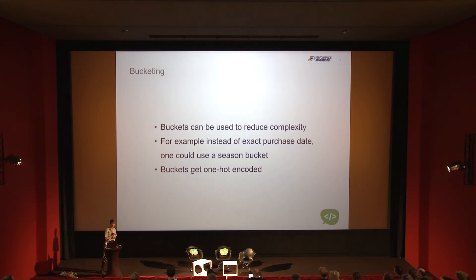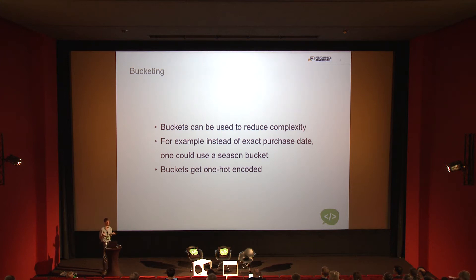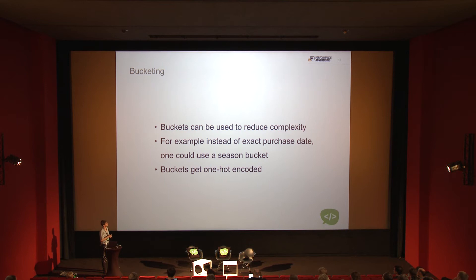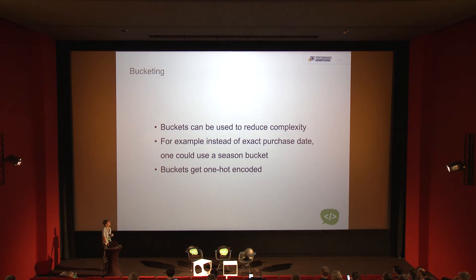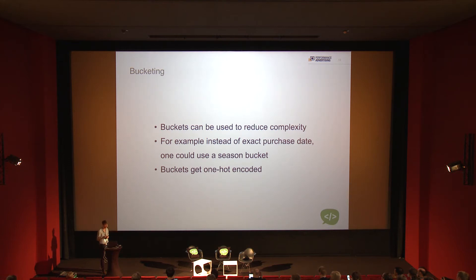Another technique is called bucketing. For example, if you want to use when a product was added to your shop, it wouldn't be wise to use the exact date because the information from that is probably nothing — if it's the 30th or 29th, it doesn't matter. So you'd use bucketing: define four buckets called seasons, and if a product was added in February it goes in the winter or spring season. This reduces model complexity. The buckets also get one-hot encoded, giving you four dimensions for seasons. This whole process of preparing and enriching data is called feature engineering.